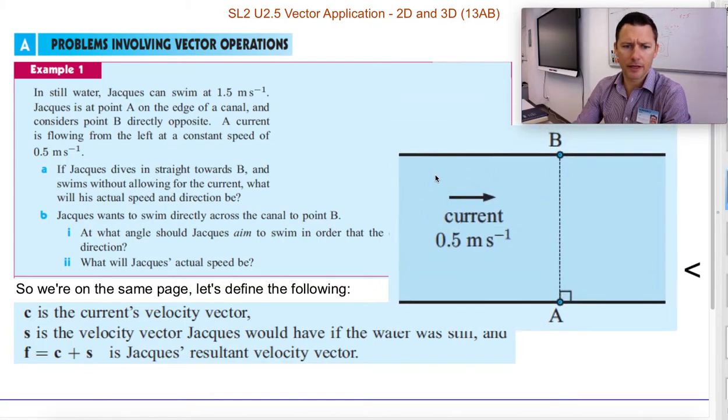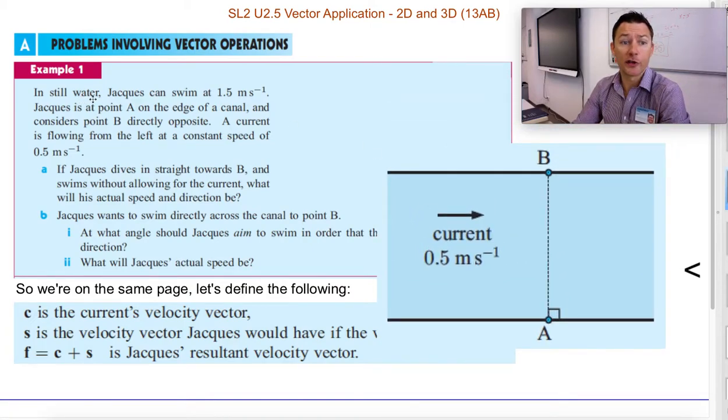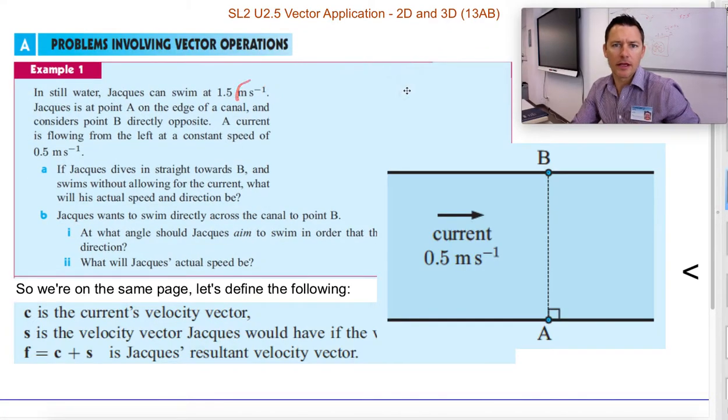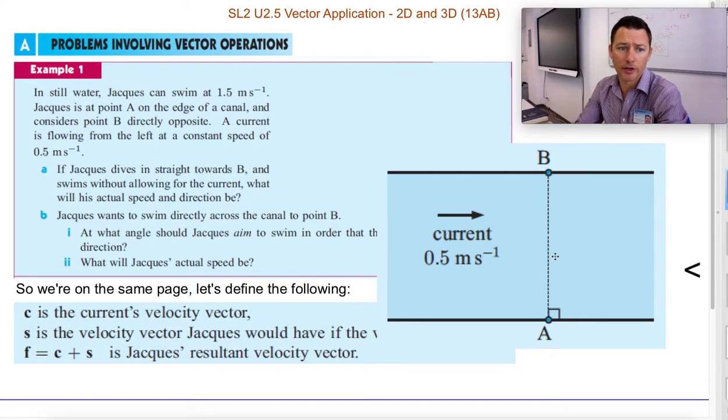In still water, Jacques, maybe it's Jacques Cousteau. Jacques can swim at 1.5 meters per second. This is a notation for meters times, that really means meters per second. And so Jacques can swim at 1.5 m/s. In still water, he's trying to swim from point A to B, but there's some current.